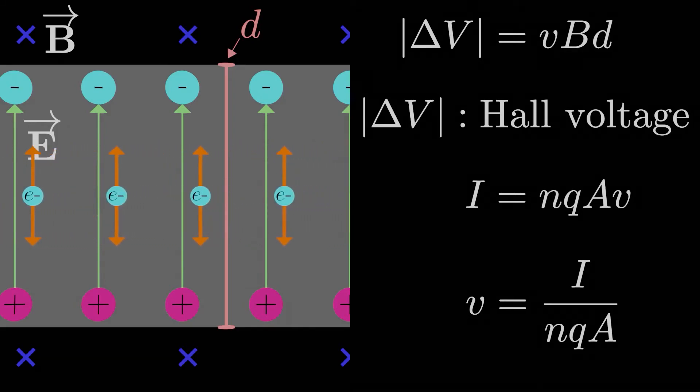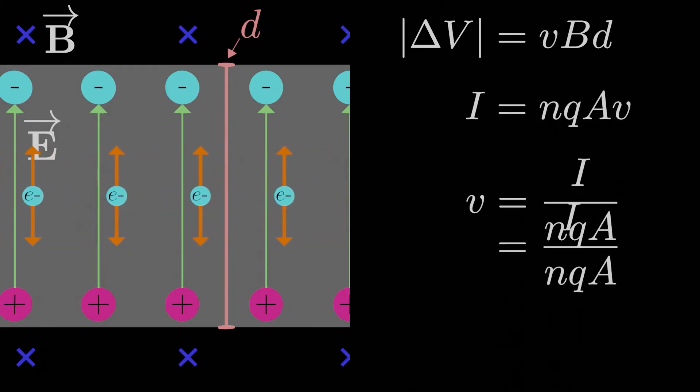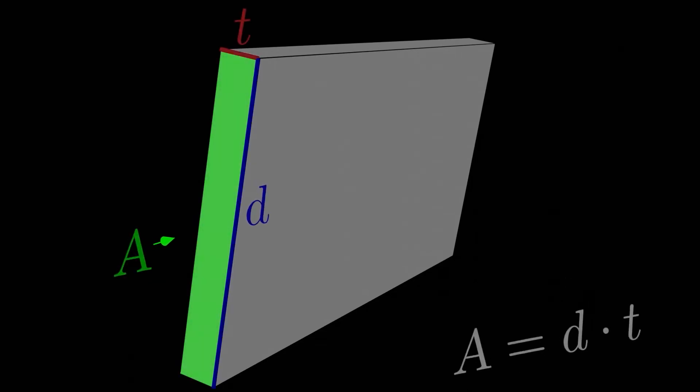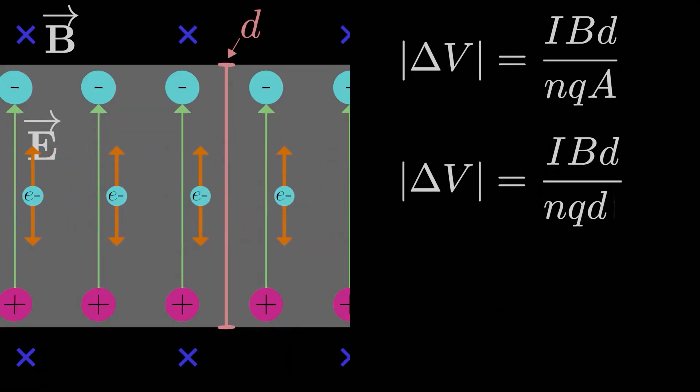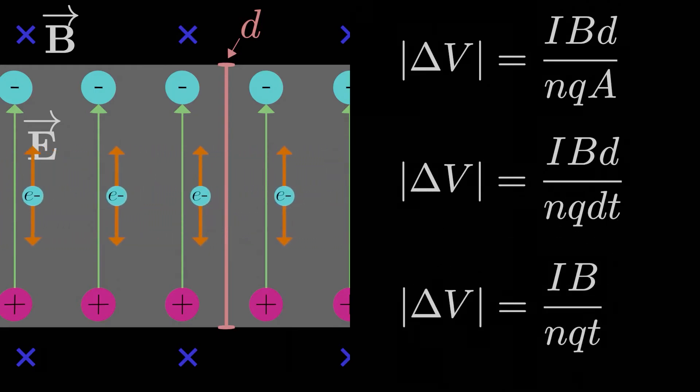...it's probably just negative e for an electron if we're dealing with a metal slab, and the cross sectional area of the conductor. We can plug all this in for our drift speed, and we have idb over NqA. The cross sectional area of the slab A is just going to be d times t, where t is the thickness of the slab. So our final expression for the Hall voltage across this slab is ib over NqT.